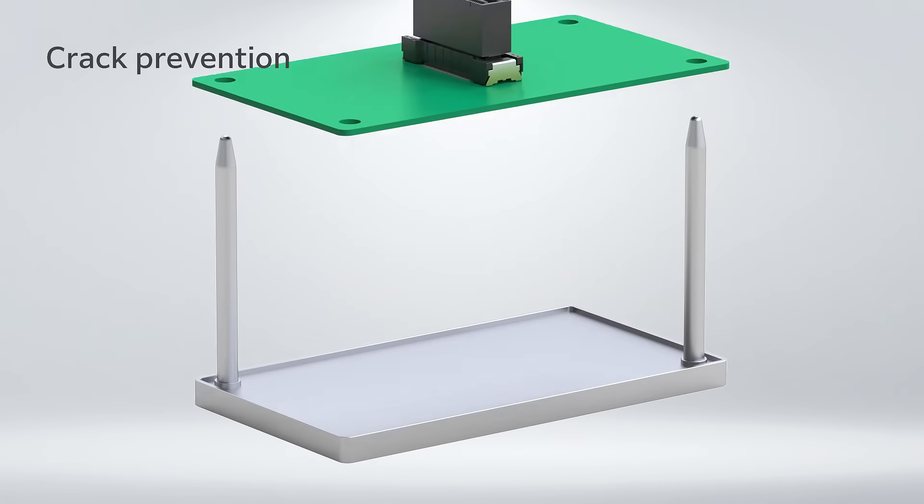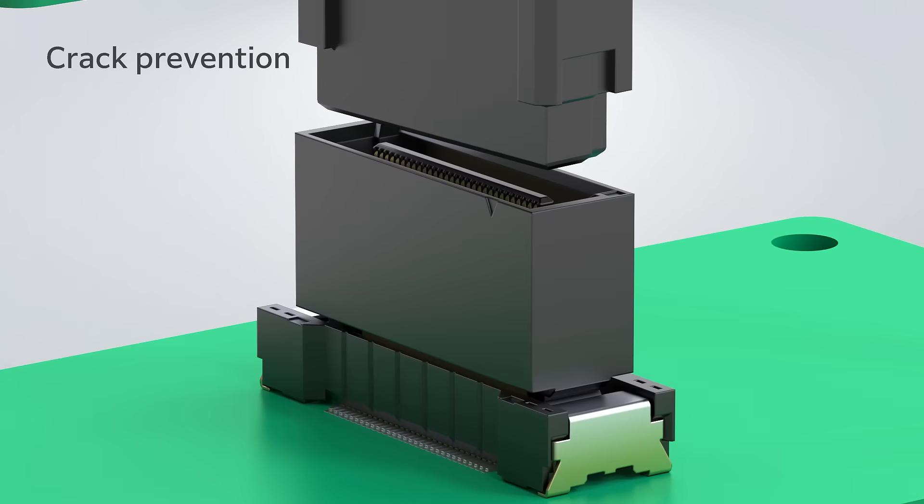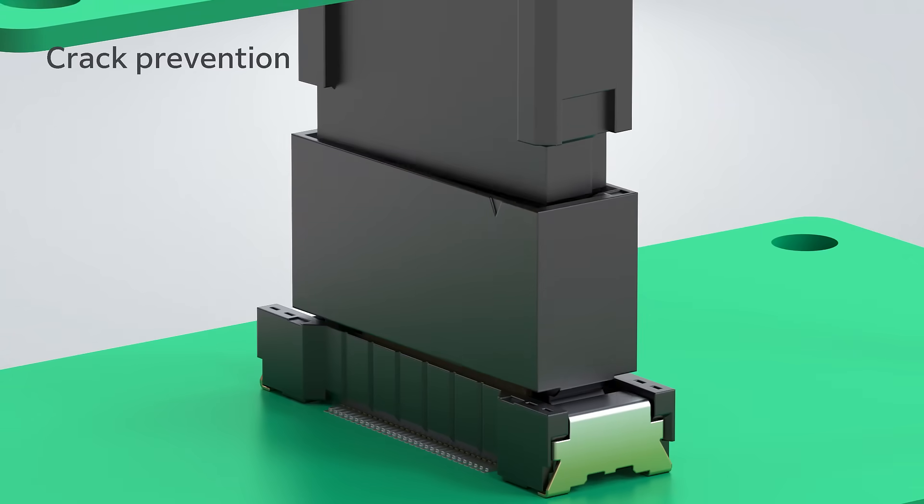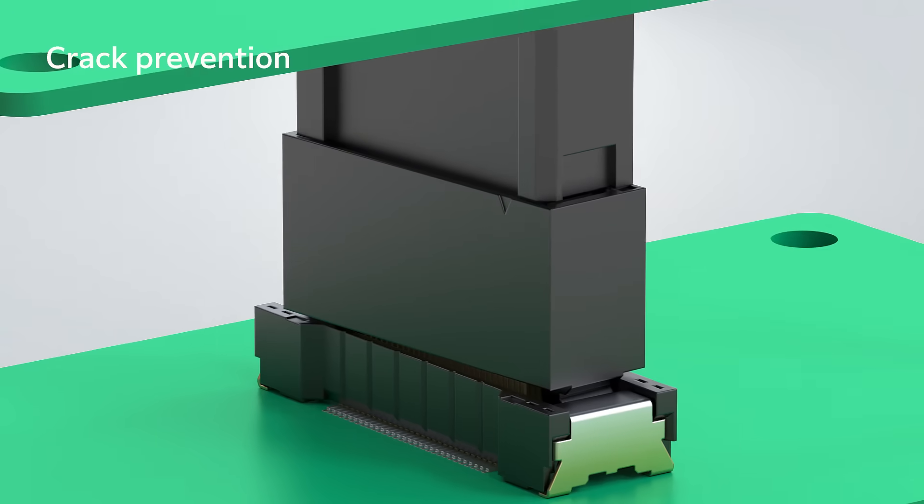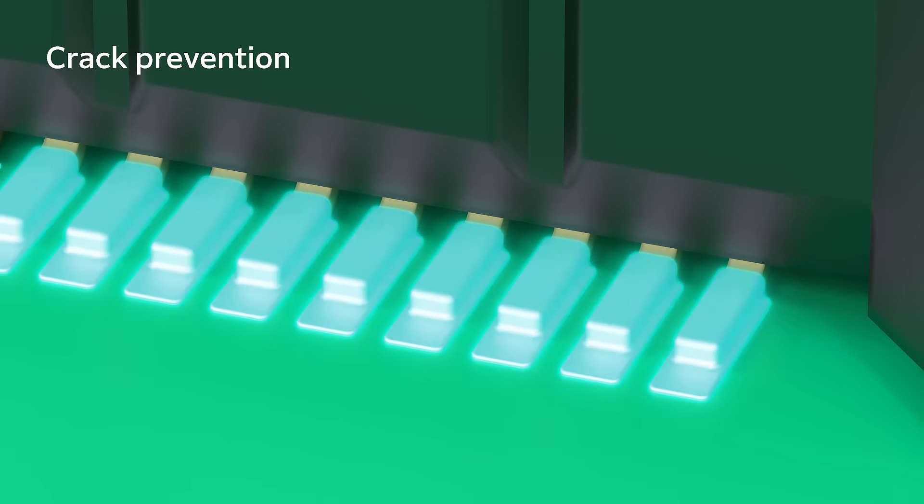The floating structure makes it possible to absorb the deviation of the mating position that occurs when mounting the connector on the board. It reduces the load on the solder part of the terminal and helps prevent cracks.